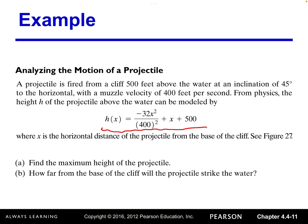Coming back to the problem, we need to: (a) find the maximum height of the projectile, and (b) find how far from the base of the cliff the projectile strikes the water — that's asking for the x-intercept. Finding the maximum height means finding the vertex, because the model is a quadratic function.